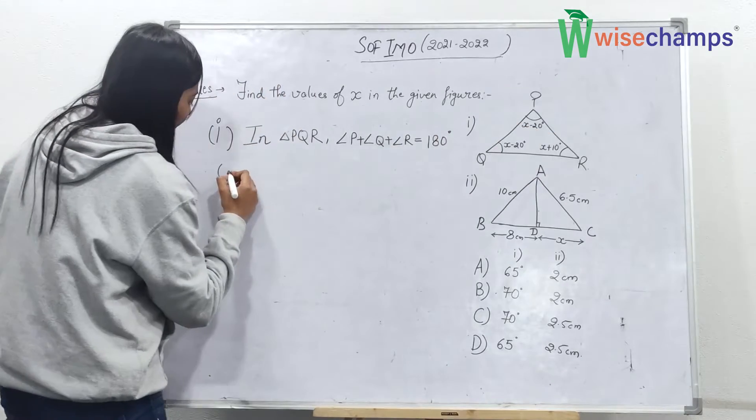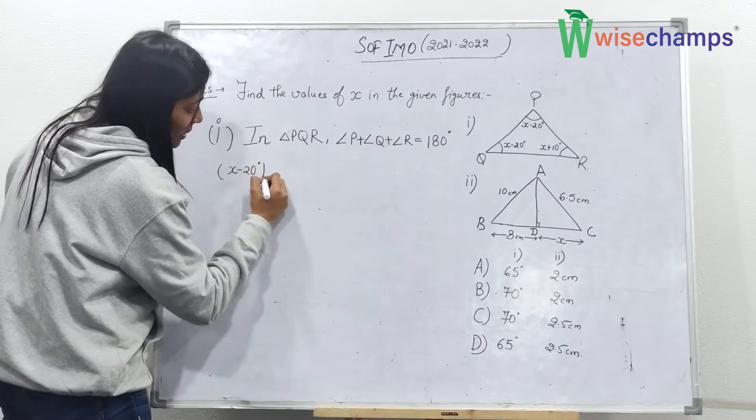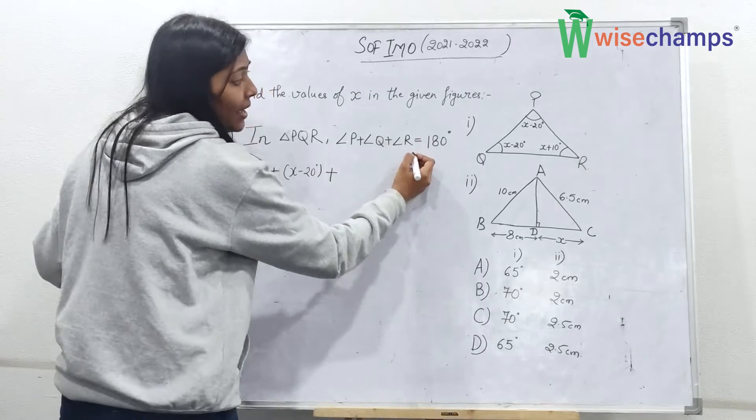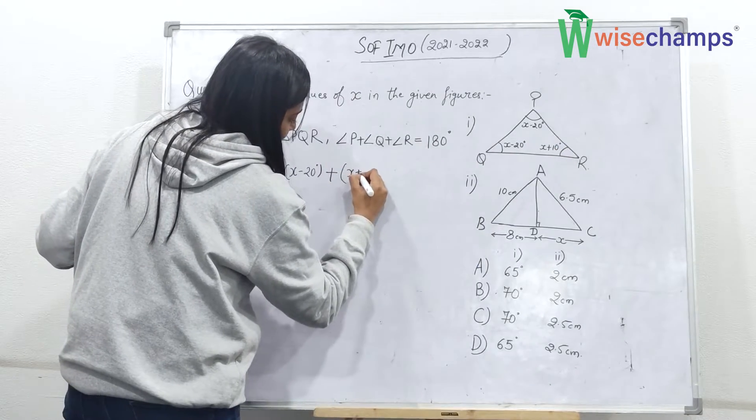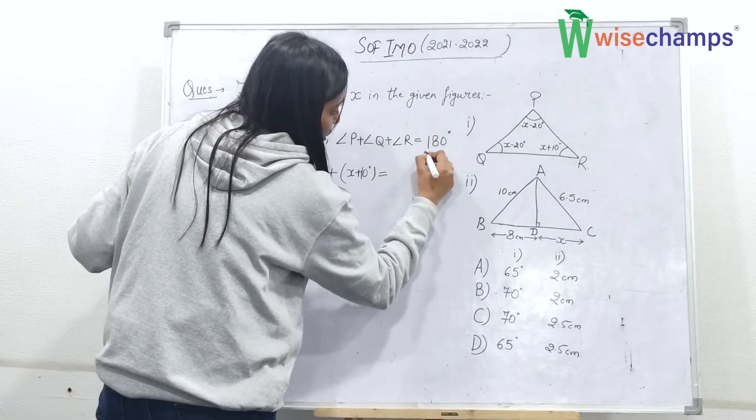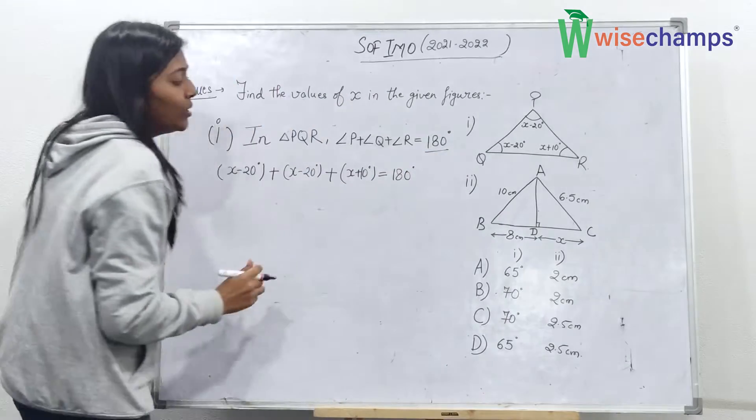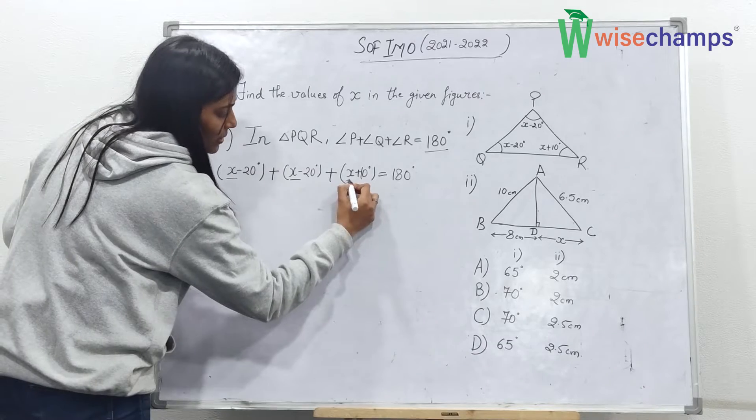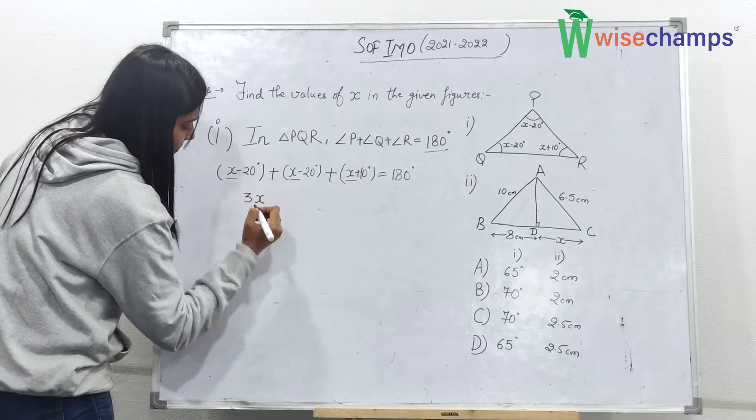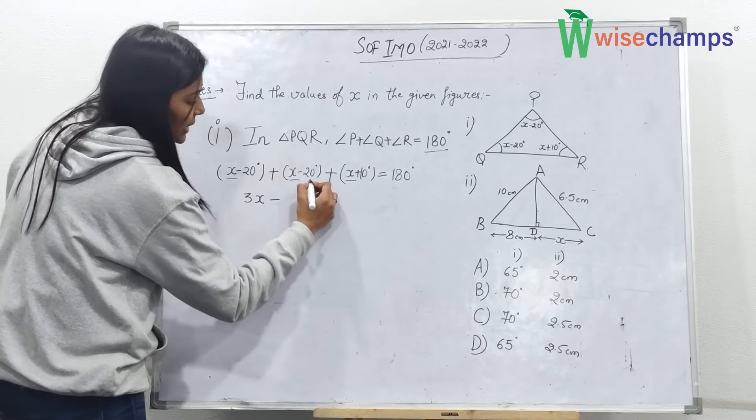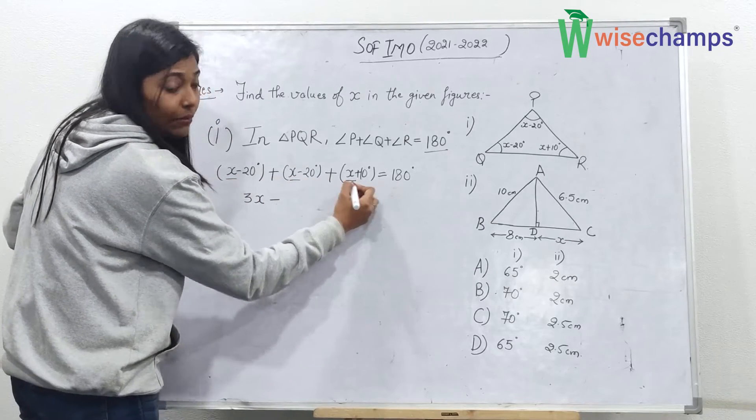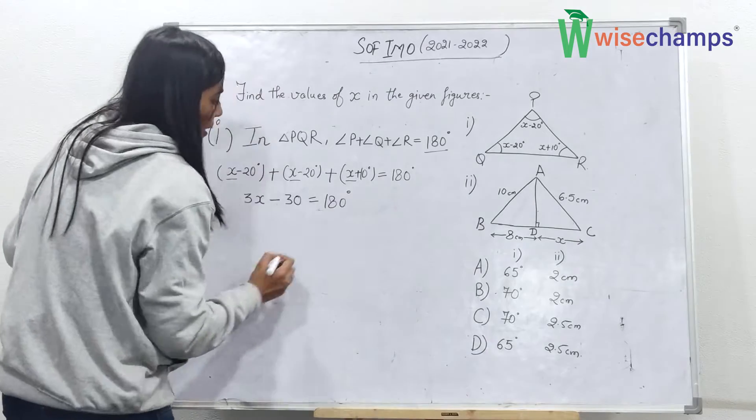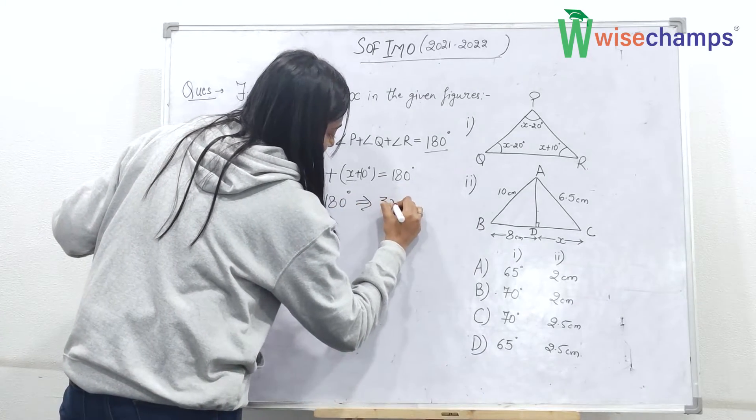Now, angle P is X minus 20 degrees, plus angle Q is X minus 20 degrees again, and angle R is X plus 10 degrees, equals 180 degrees. So now you need to simplify this. X plus X plus X is 3X. Now minus 20 minus 20 plus 10, we will get minus 30 equals 180 degrees.